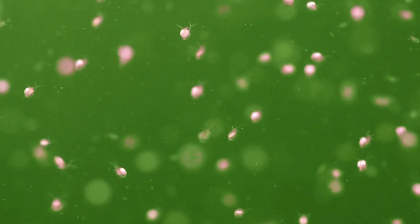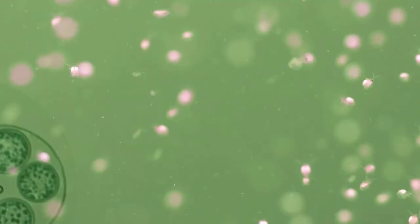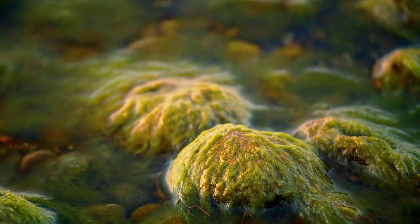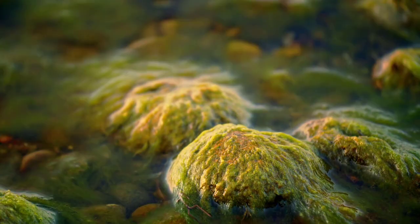Diatoms carry out photosynthesis and compose an important part of phytoplankton found in marine and freshwater environments. The oomycetes are fungal-like and are completely heterotrophic because they absorb extracellularly digested food materials. These protists resemble fungi because they produce a filamentous growth characteristic of molds. The protists traditionally have been called protozoa, proto- meaning first, and zoo- meaning animal.